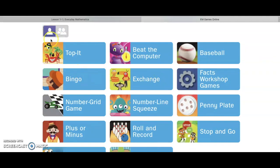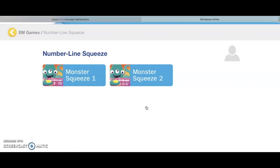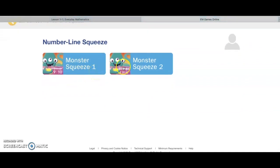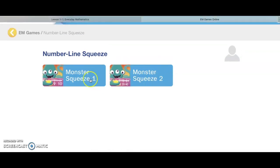So now, I am going to play the computer. Here is my Octopus Number Line Squeeze. I am going to tap on it. And I have a choice: Monster Squeeze 1, Monster Squeeze 2. Well, I am going to choose Monster Squeeze 1 to start.